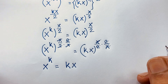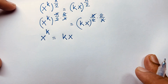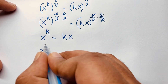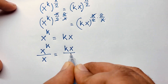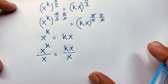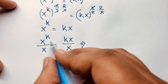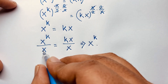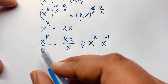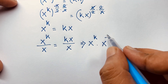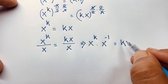Now I divide both sides by x, so x to the power k over x is equal to k. Using the exponential law, 1 over x is x to the power negative 1, so this becomes x to the power k times x to the power negative 1, and on the right side k x divided by x gives k.